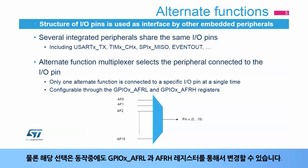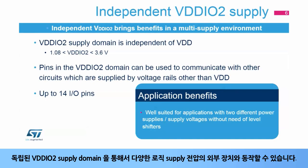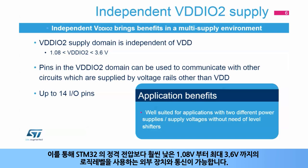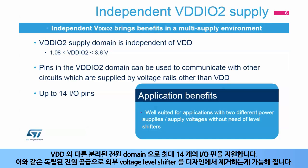This selection can be changed during runtime of the application through the GPIOX AFRL and AFRH registers. The independent VDDIO2 supply domain allows operation in an environment with several different logic supply voltages. It allows the STM32 to communicate with logic supplied from 1.08 volts, much lower than the VDD supply of the STM32, which can range up to 3.6 volts. Up to 14 I/O pins in this domain can be used to communicate with other logic circuits supplied by voltage rails other than VDD.